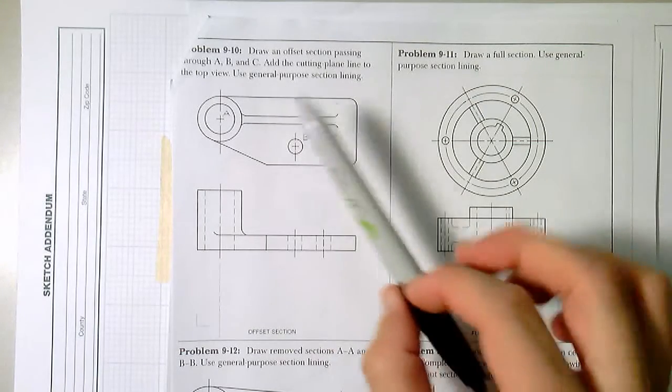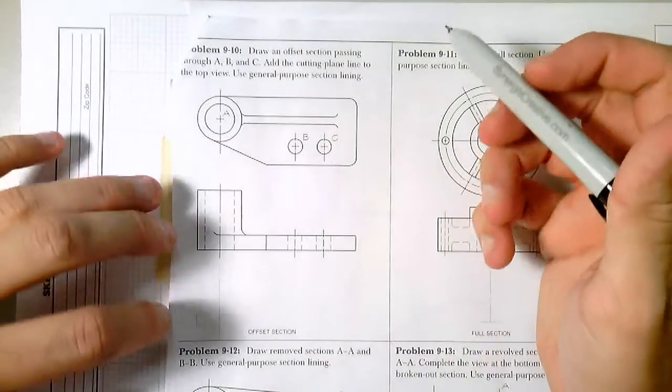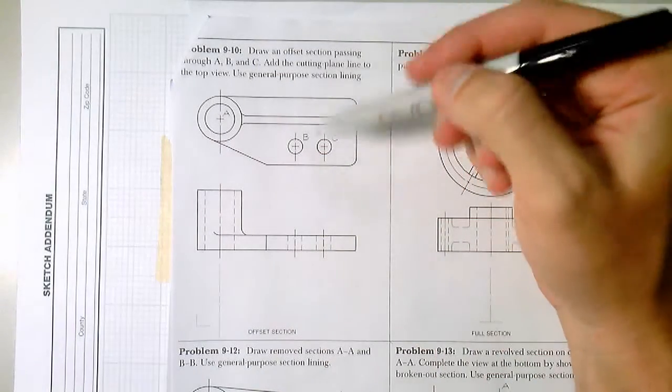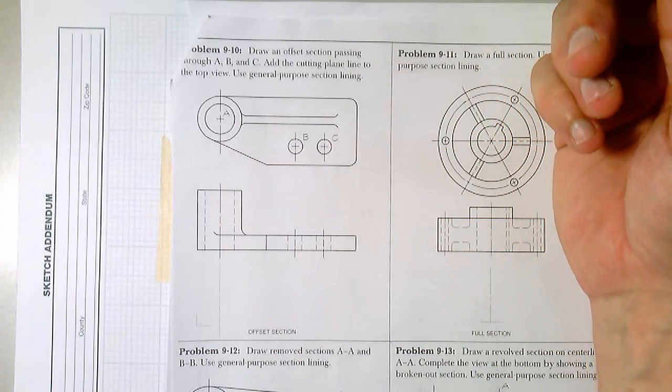And now we're going to talk about an offset section. I'll work through a few of these and we'll keep moving forward to help you out. But this will help build some rhythm in understanding how to draw proper section views.